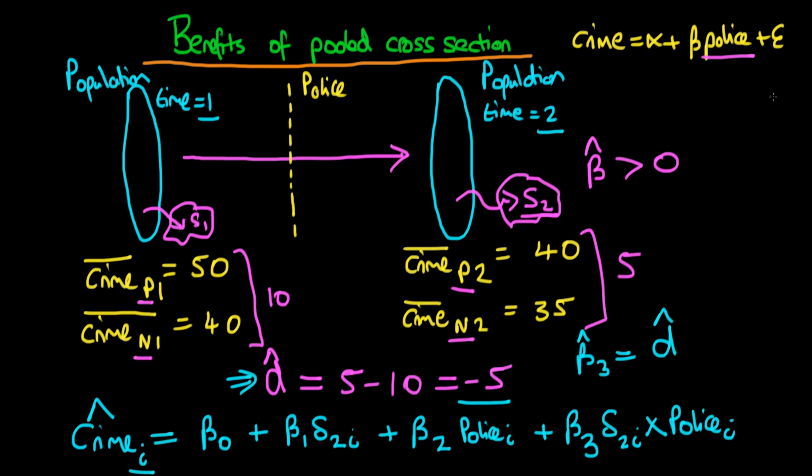But one of the benefits of estimating this model via OLS is that we will get an estimate of the standard error of beta 3 hat. And because we have an estimate of the standard error of beta 3 hat, we can actually do inference. So we can say whether this minus 5 was actually statistically significant or not.